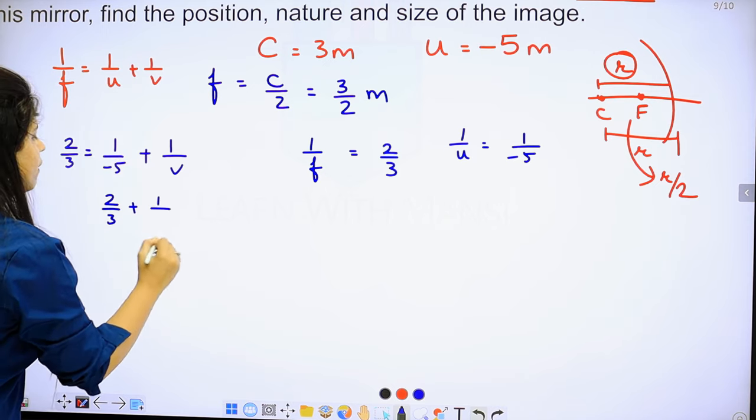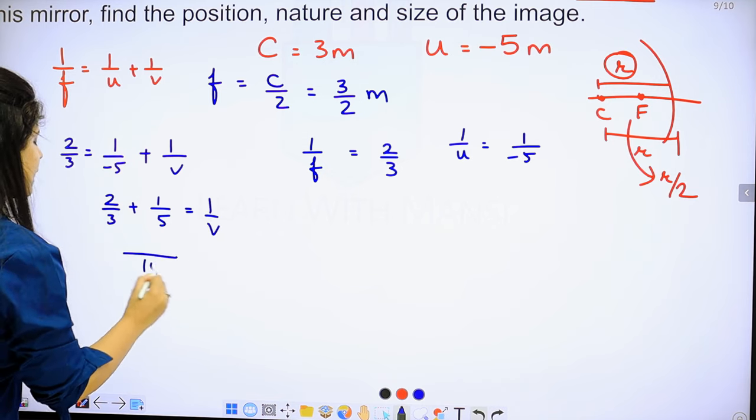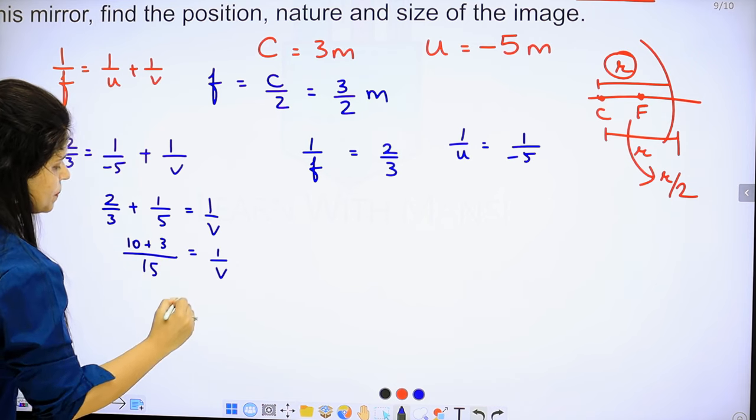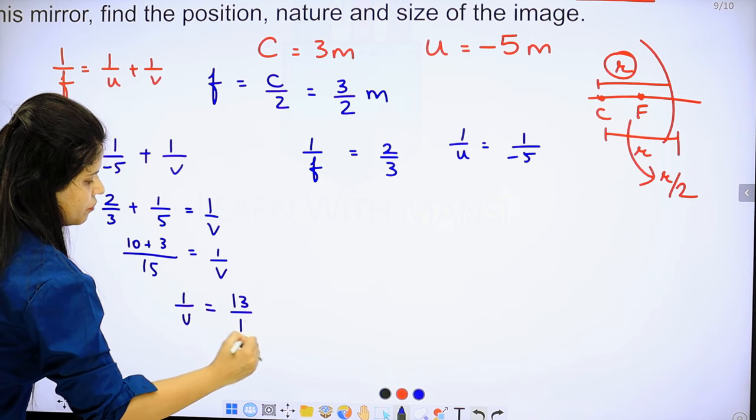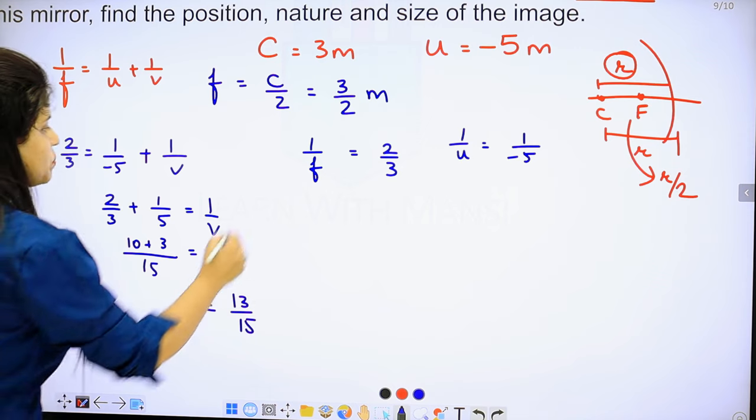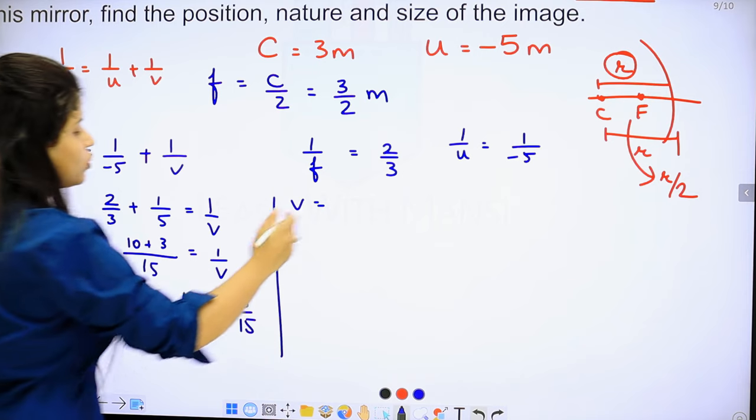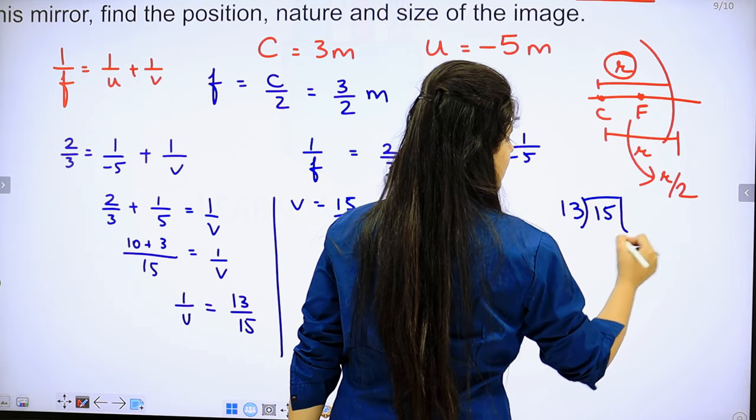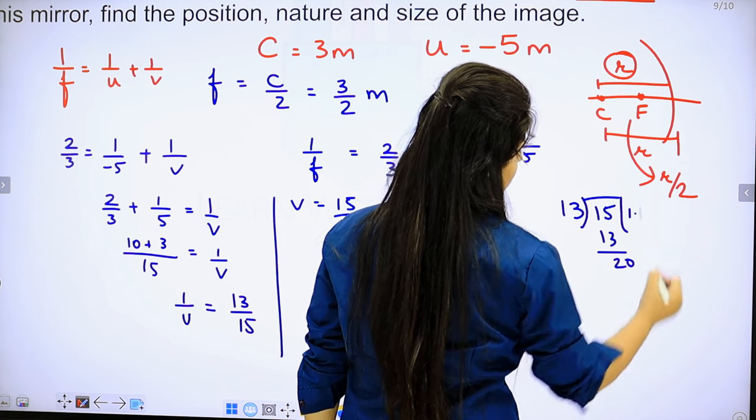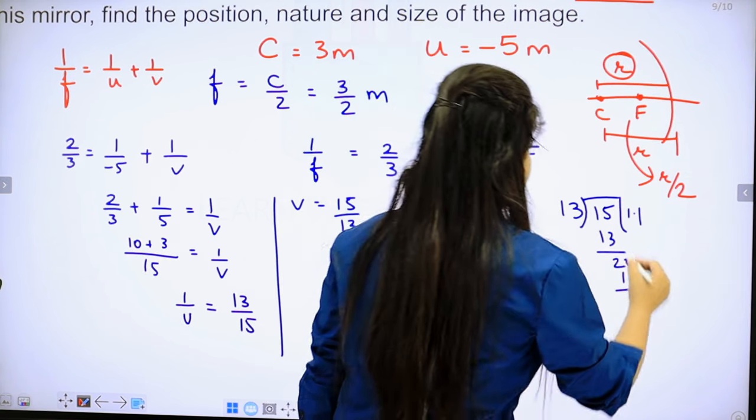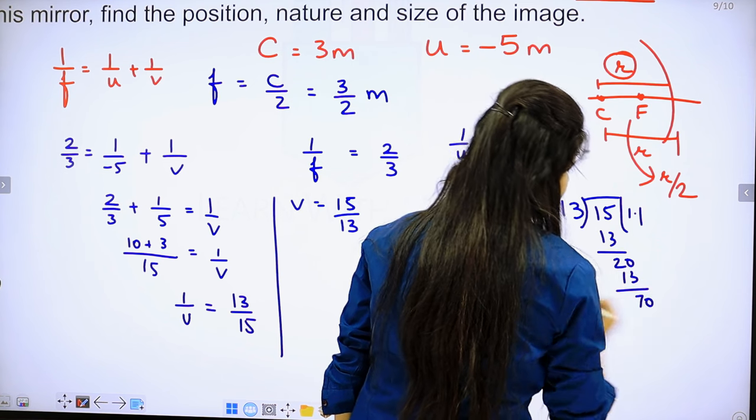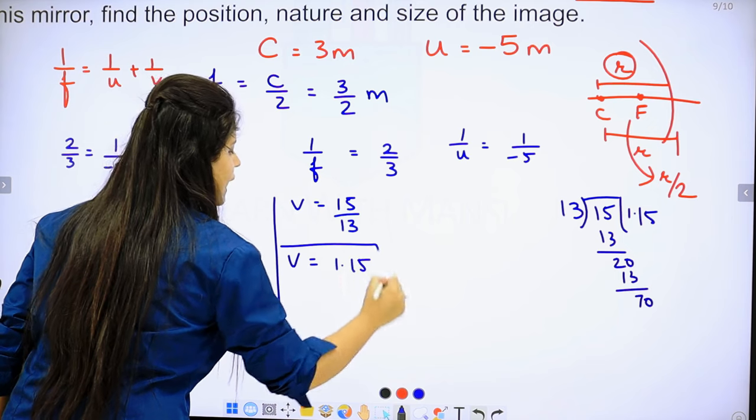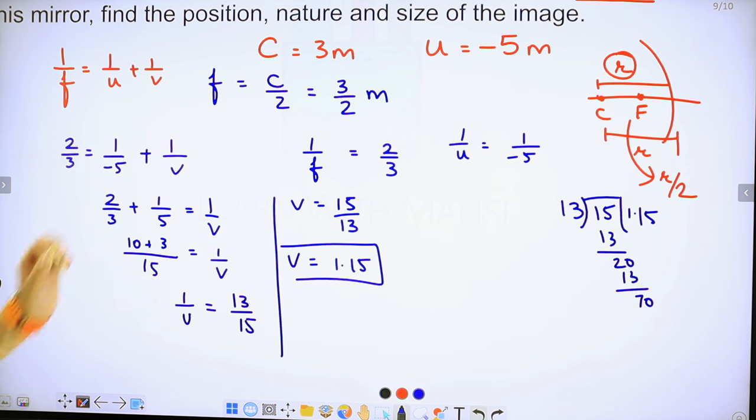So 1 upon V is 13 upon 15. Which means, if we reciprocal it, V is 15 upon 13. If we divide 13 into 15, this will be 1.15. V value is 1.15. What we got here is that the distance from the image to the pole is 1.15.